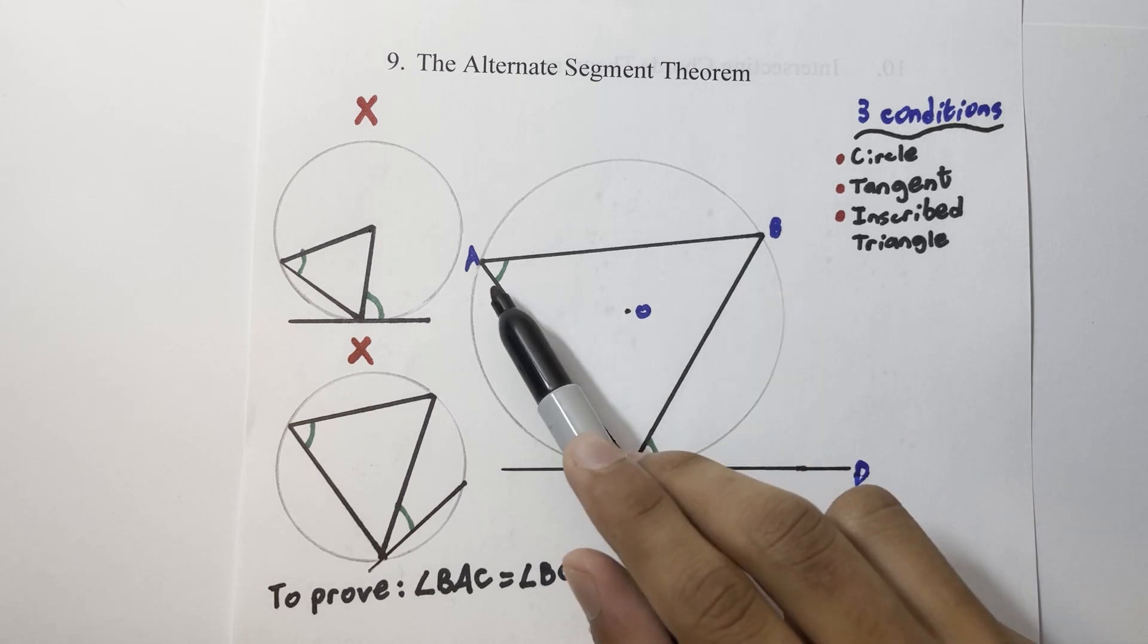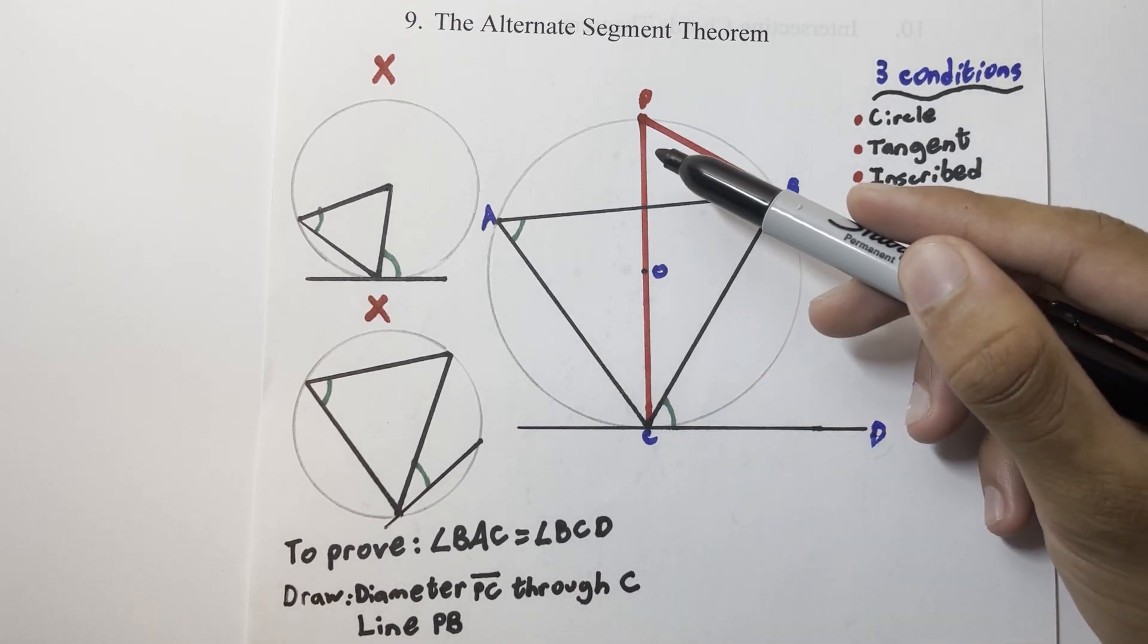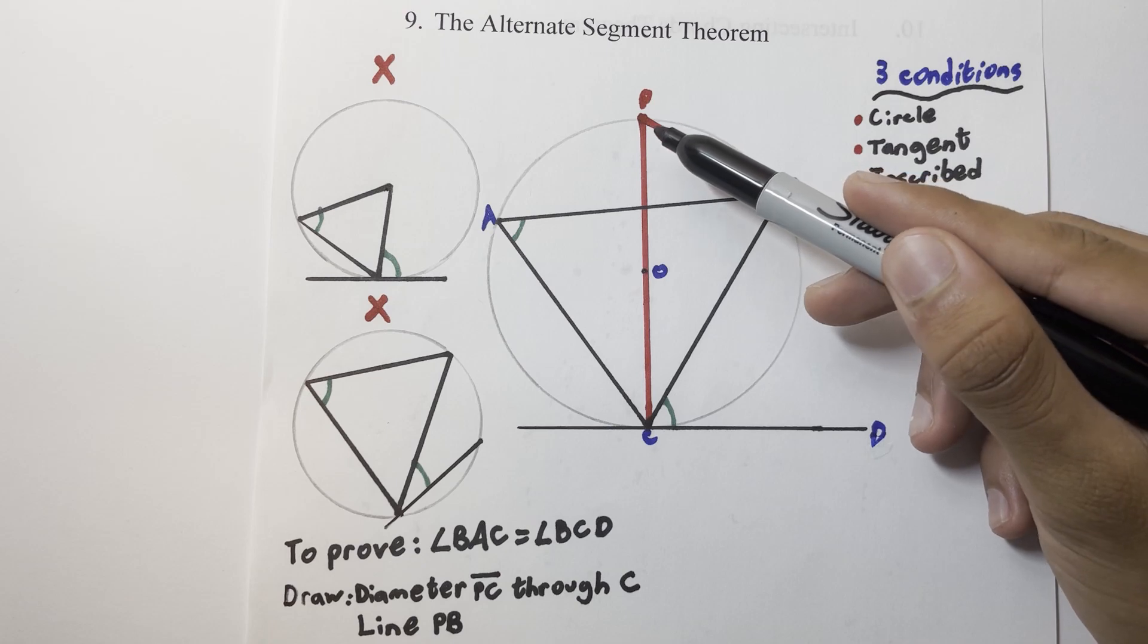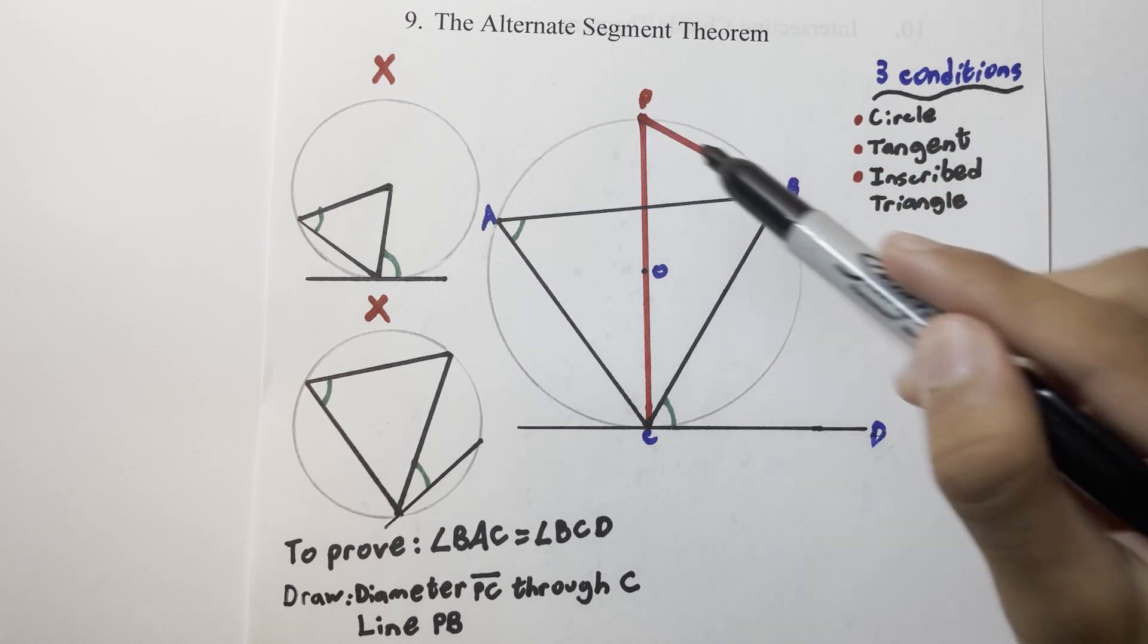We want to prove that the angle BAC is equal to the angle BCD. To prove this theorem, we're going to want to draw two main construction lines. Firstly, a diameter up through C to another point we've drawn on called P, so the diameter PC, before we draw a chord connecting point P to point B.